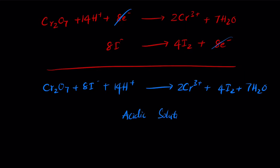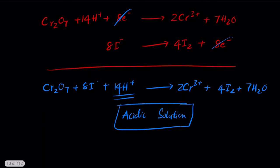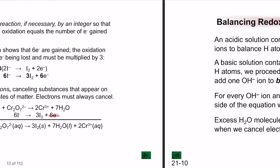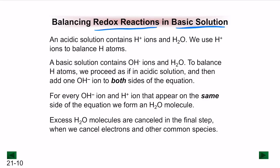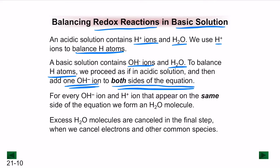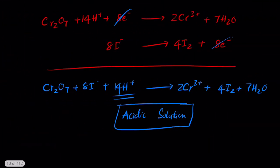When the reaction is in a basic solution, we proceed as if in acidic solution first, then add one OH⁻ for every H⁺ that appears on the same side. Each pair of H⁺ and OH⁻ on the same side forms an H₂O molecule. So, starting from the acidic balanced equation, if it were in a basic solution, we add 14 OH⁻ to both sides.